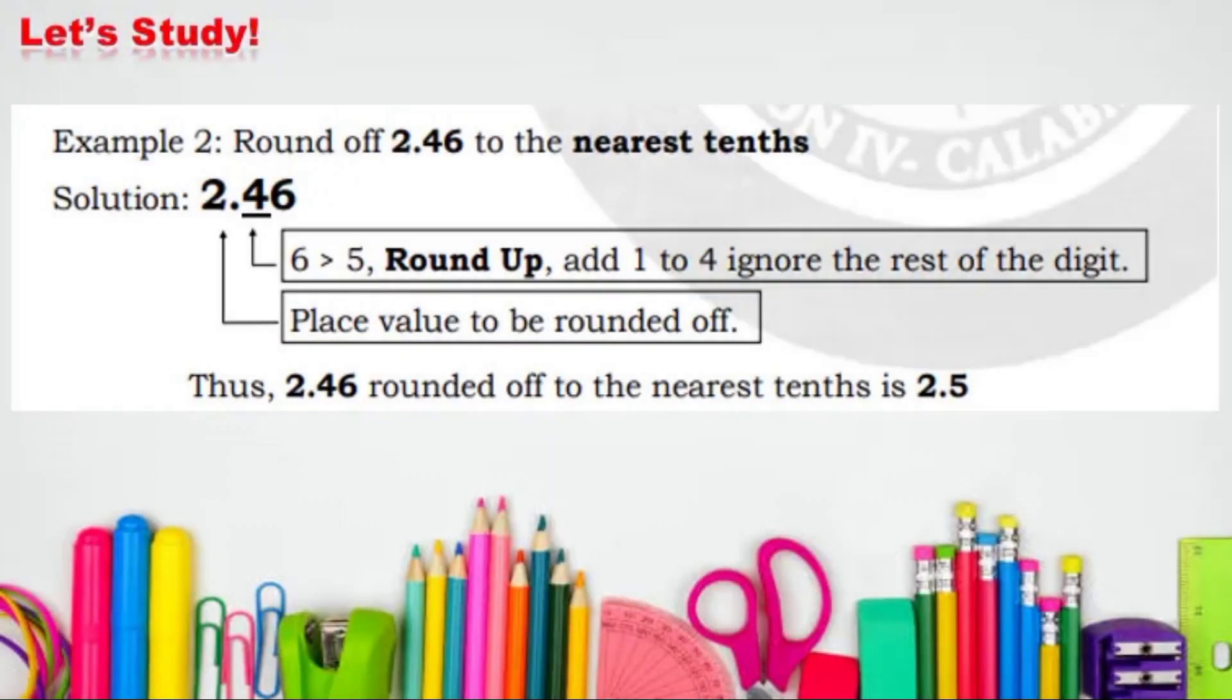Second example: Round off 2.46 to the nearest tenths. There is another solution. Look at the digit to be rounded off. 4 is in the tenths place. The number on the right is 6, it is greater than 5, so we will round it up. We'll add 1 to 4, then ignore the rest of the digit. Thus, 2.46 rounded off to the nearest tenths is 2.5.